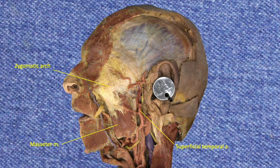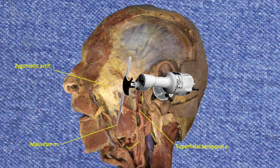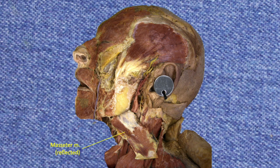We repeat the same action posteriorly on the arch. We again place a probe deep to the arch and again use a bone saw to cut through the arch. We can now use forceps to reflect the masseter muscle inferiorly. With the masseter reflected, here's the ramus of the mandible and the coronoid process of the mandible, covered by the attachment of the temporalis muscle, which has now been cleared to better demonstrate its location.